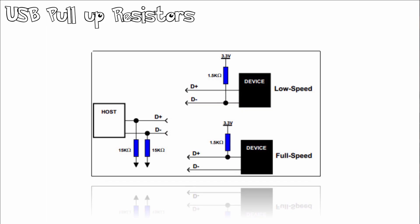Looking at USB pull-up resistors: a USB device pulls one of the data lines high with a 1.5 kΩ resistor. This overpowers one of the pull-down resistors in the host and leaves the data lines in an idle state called J. The choice of data line indicates device speed support — full speed devices pull D+ high while low speed devices pull D− high.